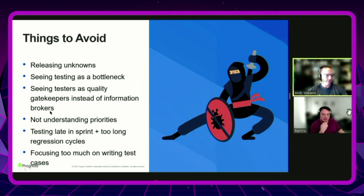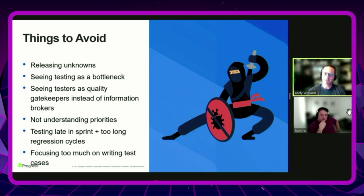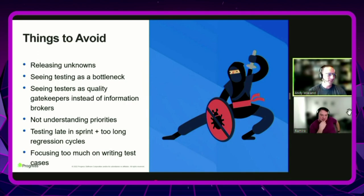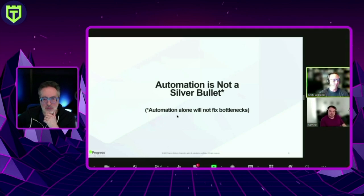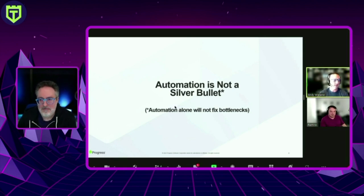Understanding the priorities and where testing fits is important. Testing doesn't usually fit easily, and automating is not a silver bullet — it's not going to fix everything. You'll still have some manual testing. The goal is to speed up testing enough to keep up with release cycles, which are getting faster and faster.